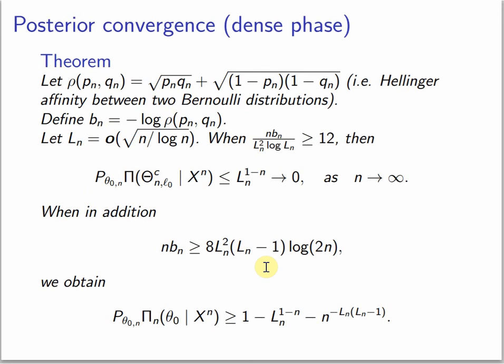In the dense phase when Bn is the log of the Hellinger affinity and Ln satisfies these bounds, then the posterior concentrates around the true number of classes. And if in addition this holds, then we have posterior concentration in one point.